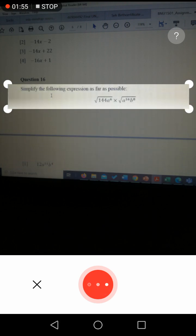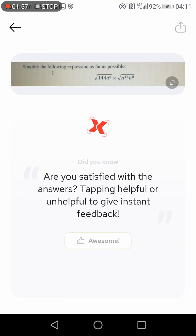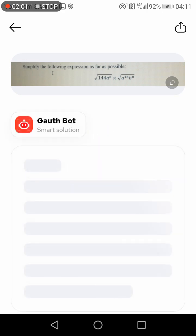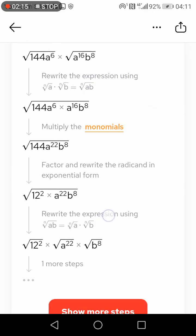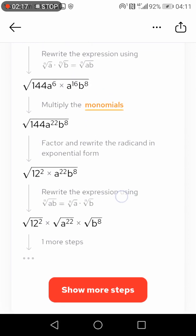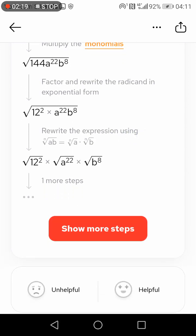It says the answer is 12a to the power of 11b to the power of 4, and then it shows the steps on how it came up with this answer. It even indicates show more steps.